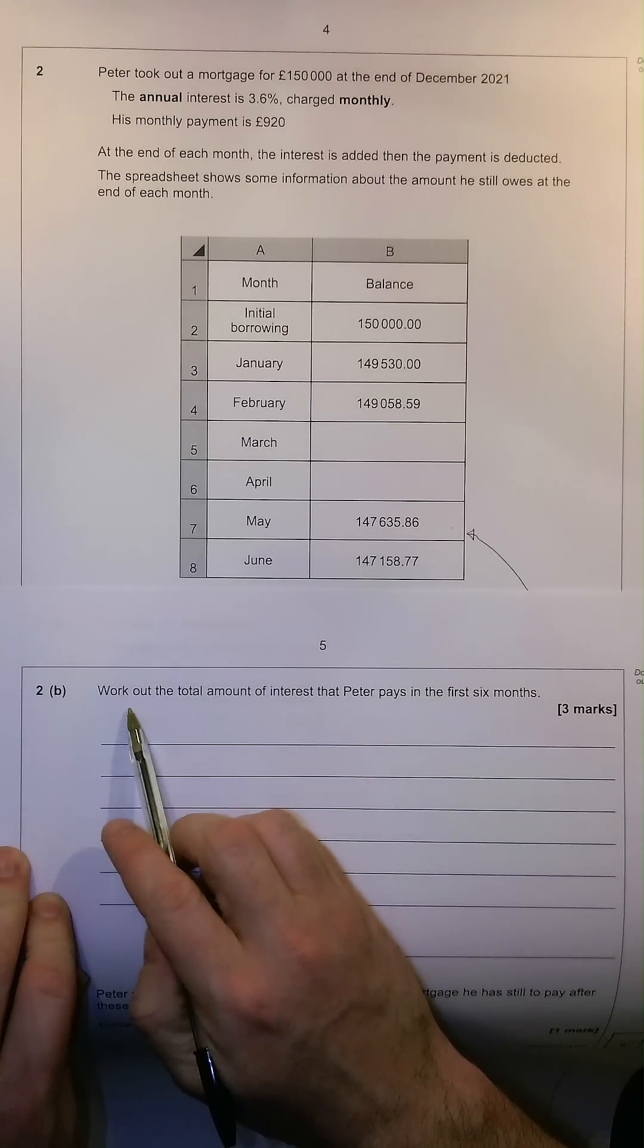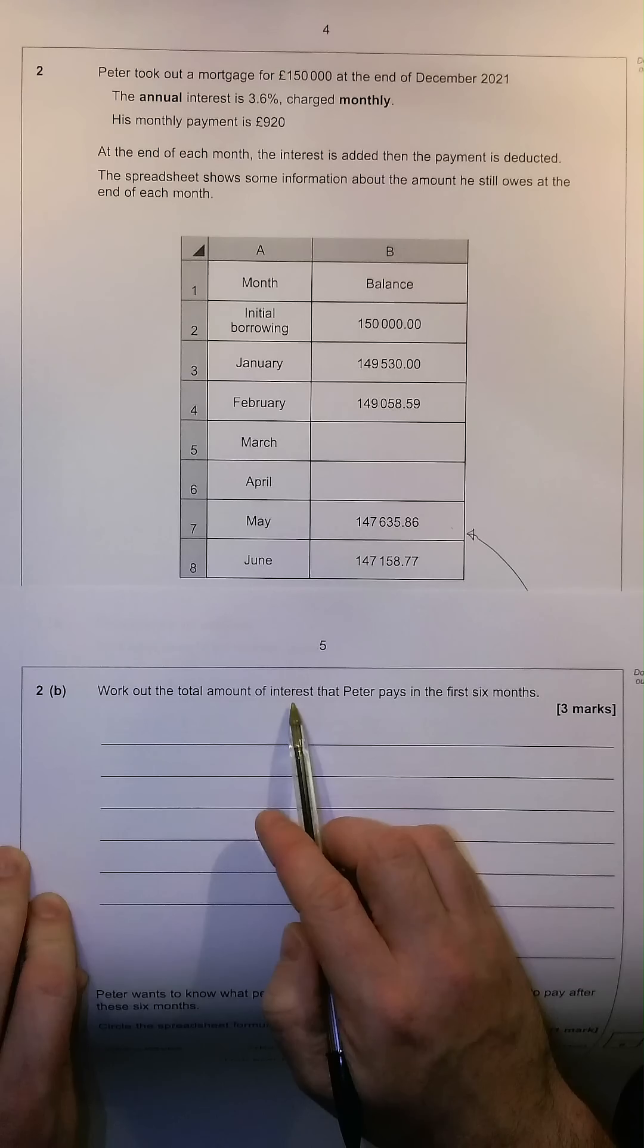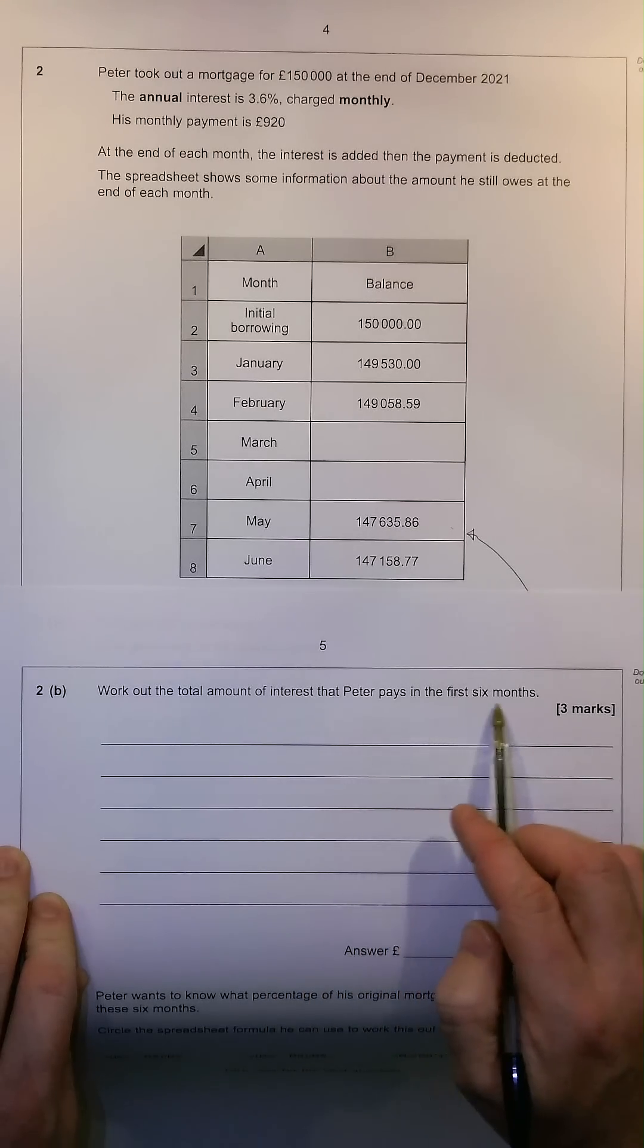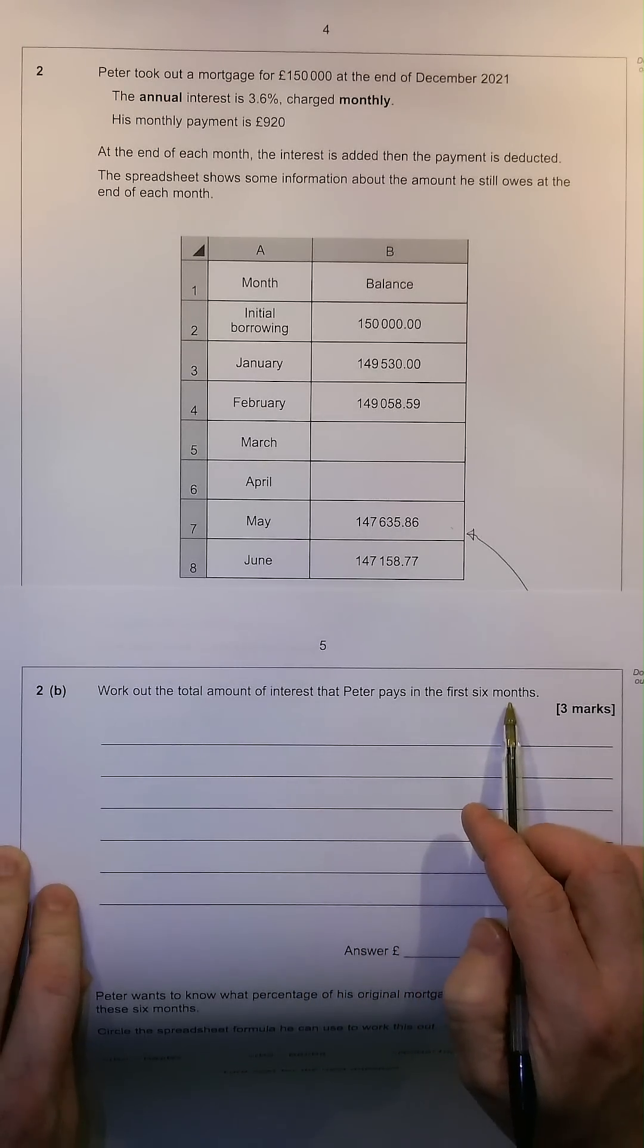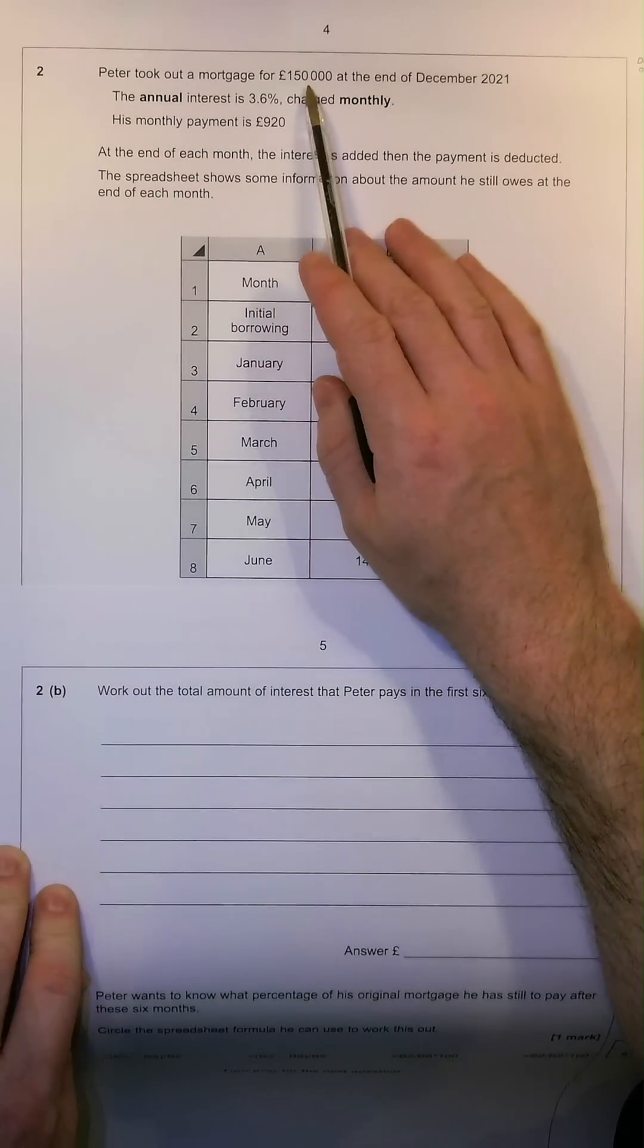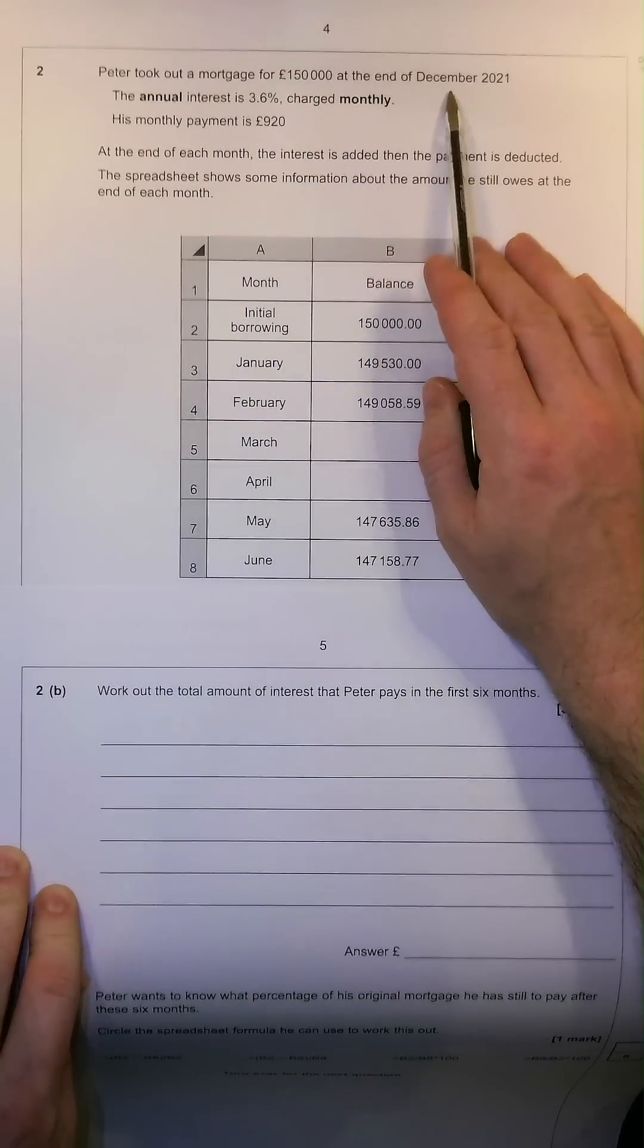This is a question that requires us to work out the total amount of interest that Peter pays in the first six months of his mortgage. He took out a mortgage for £150,000 at the end of December 2021.